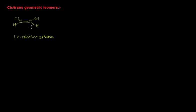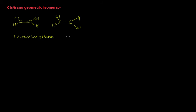We can also write this compound in another way. You have a carbon-carbon double bond, with chlorine and hydrogen on one carbon, and hydrogen and chlorine on the other. You can see that the molecular formula of this compound and the molecular formula of the other arrangement are the same, but if you look at the chemical as well as physical properties of these two compounds, those properties are different.